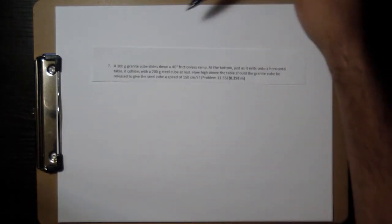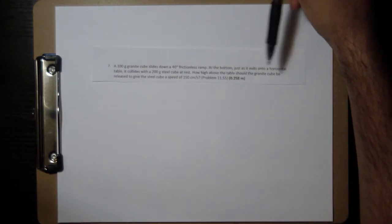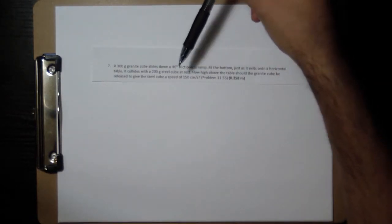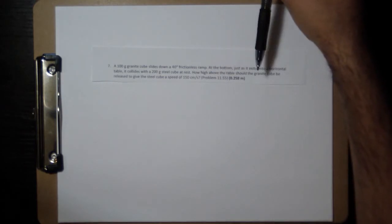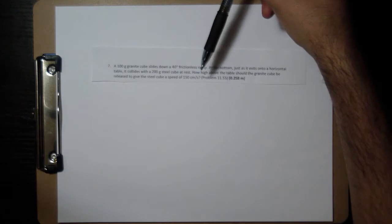Okay, let's look at problem number seven. A 100 gram granite cube slides down a 40 degree frictionless ramp. At the bottom, just as it exits onto a horizontal table, it collides with a 200 gram steel cube at rest. How high above the table should the granite cube be released to give the steel cube a speed of 150 centimeters per second?